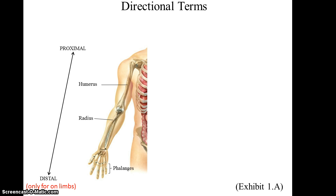For the limbs, we have the directional terms proximal and distal. This should only be used for parts of the body found on one limb. Proximal means closer to where the limb attaches to the trunk, while distal means further away from where the limb attaches to the trunk. For instance, in this image we see that the radius is distal to the humerus, and the radius is proximal to the phalanges.